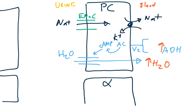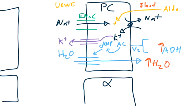Potassium travels through a luminal channel, but unlike sodium, potassium exits the cell—where it is in high concentration—to the urine where potassium concentration is low. Aldosterone, unlike ADH, acts on an intracellular receptor because it is a steroid, ultimately leading to increased protein synthesis and upregulation of the sodium-potassium pump. The net effect of aldosterone on principal cells is to increase sodium reabsorption and increase potassium secretion.